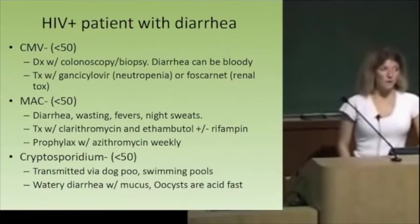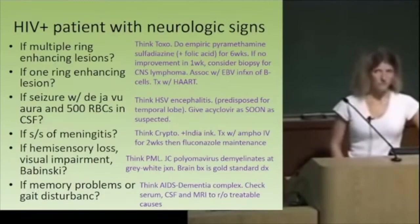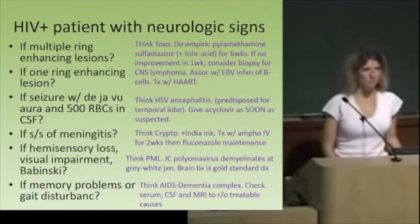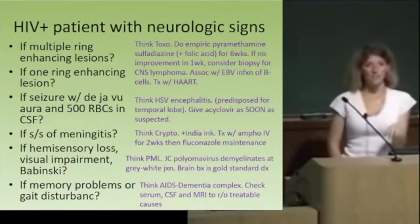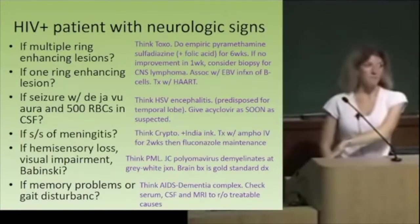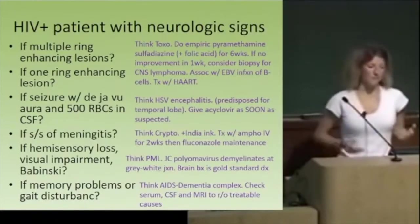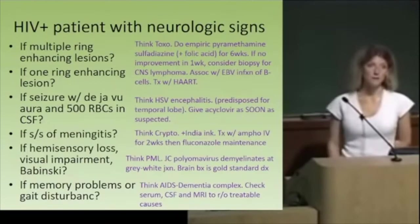HIV neurologic problems: multiple ring-enhancing lesions on CT — toxoplasmosis. Single lesion — primary CNS lymphoma. Treat both with a trial of pyrimethamine-sulfadiazine. If it gets better, it was toxo. If the single lesion remains, consider CNS lymphoma and biopsy.